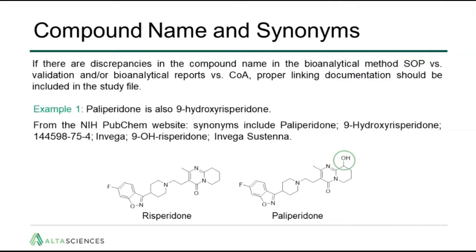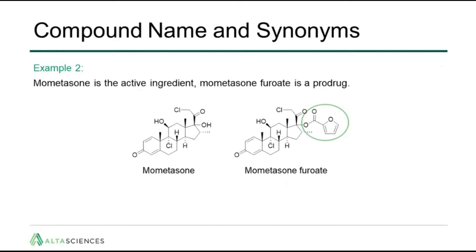Paliperidone is also known as 9-hydroxyrisperidone because it was discovered as a metabolite of risperidone. In the NIH PubChem website you will find that paliperidone is also known as 9-OH-risperidone, Invega, or Invega Sustenna. The second example is mometasone. Mometasone is the active ingredient, whereas mometasone furoate is the pro-drug. The two compounds are different and have different molecular weights. So depending on the administered compound in the study driving document, one or the other or both compounds may be required as reference standard for bioanalytical purposes.